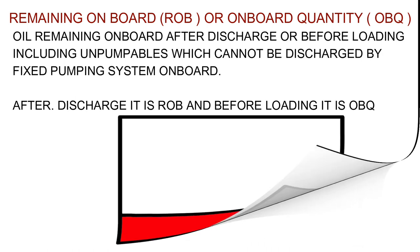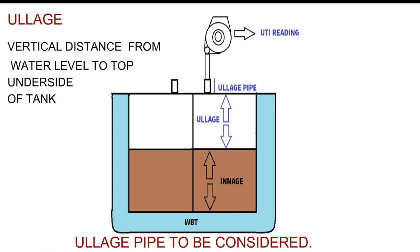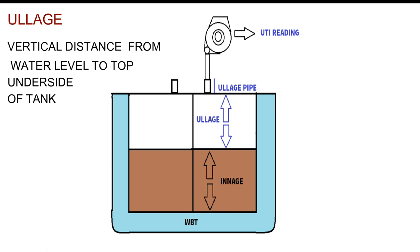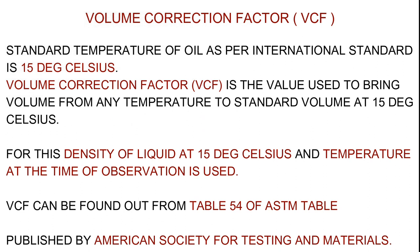Measurements of liquid use equipment such as UTI sounding tape, radar gauge, and float gauge. Ullage is the vertical distance from the liquid level to the top underside of the tank, with the ullage pipe to be considered. Sounding is the vertical distance from the liquid level to the bottom of the tank.